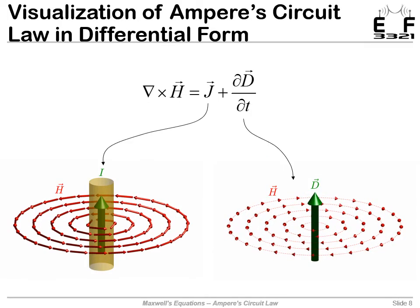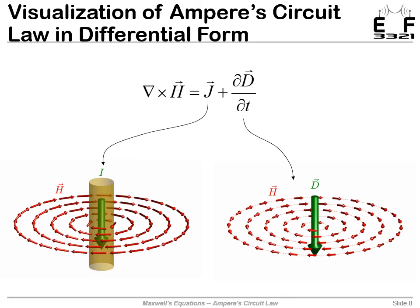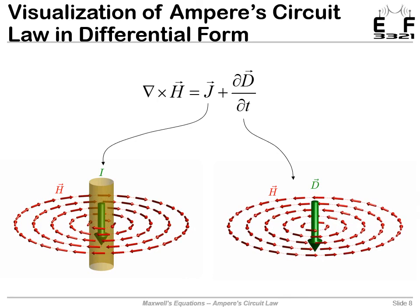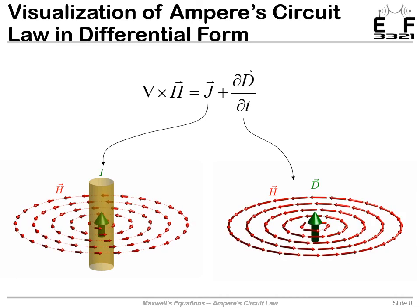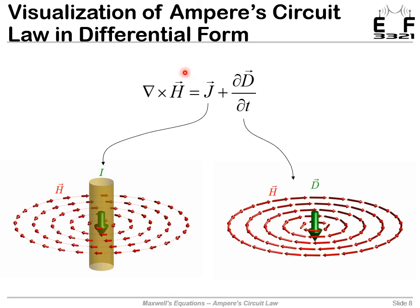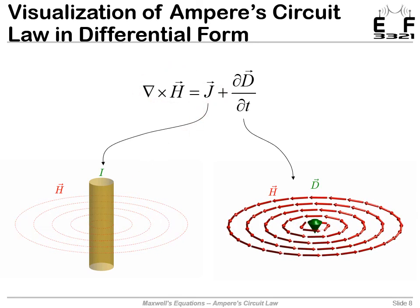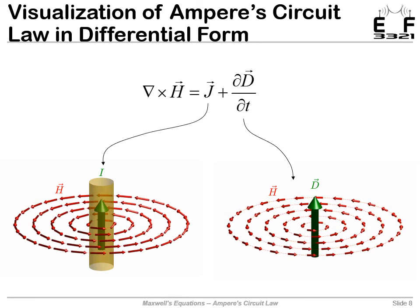We end this discussion with a visualization of Ampere's law in differential form. I'm showing the two different terms separately, but they can happen at the same time and in any combination. Looking at just the curl of H equals J over here, we see the magnetic field circulating around a current I.